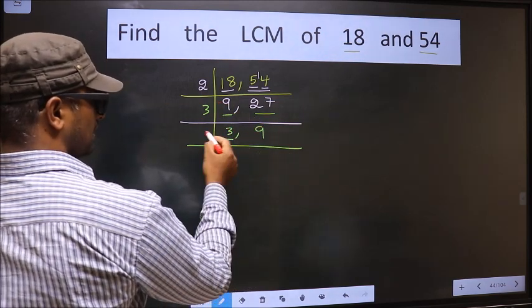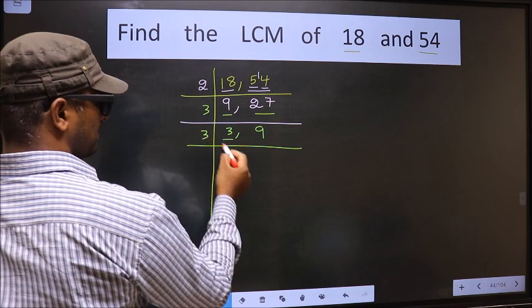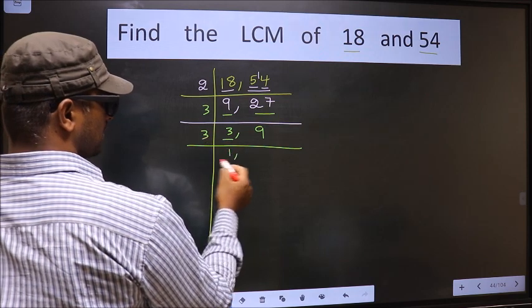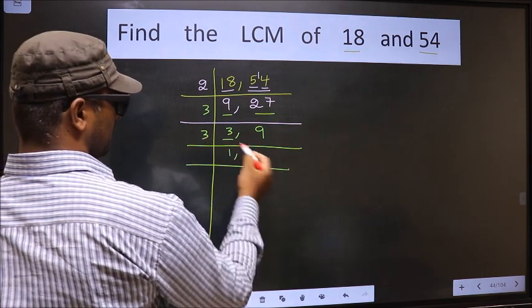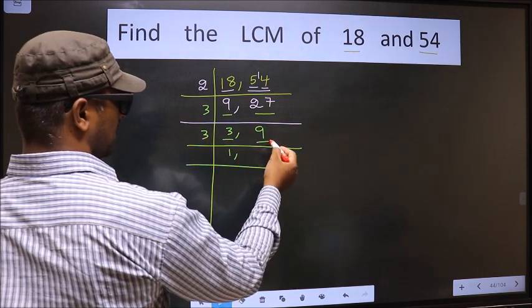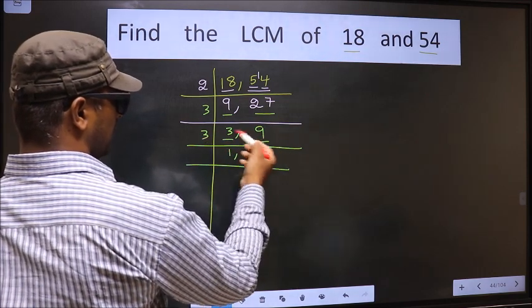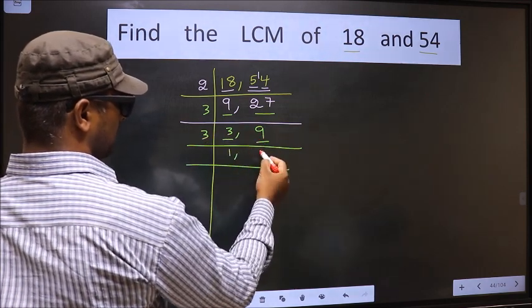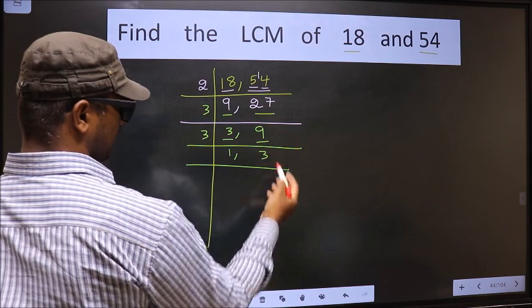Now here we have 3 — 3 is a prime number, so 3 ones 3. The other number is 9 — when do we get 9 in the 3 table? 3 threes 9.